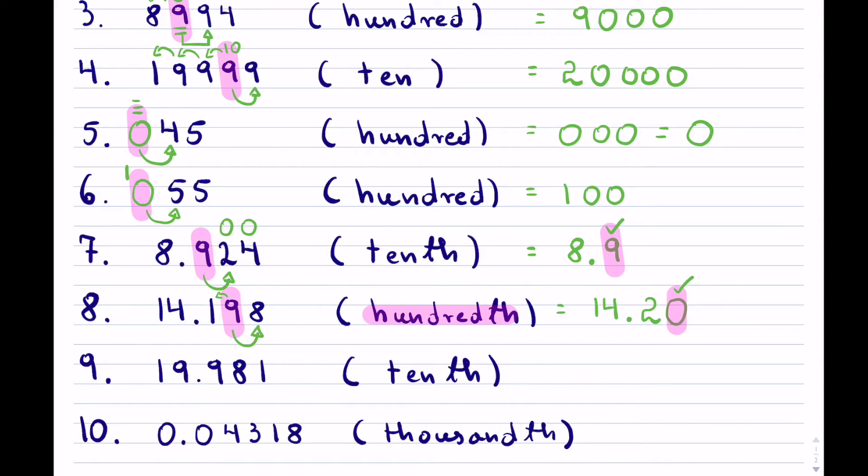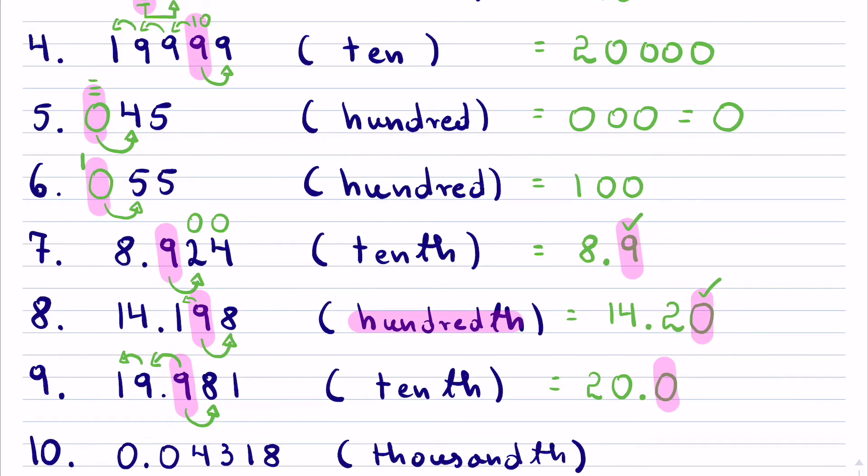Question 9 wants us to round 19.981 to the tenths. We look next door - it's very similar to the previous question. It's an 8, so my 1 is going to start carrying over. It's going to carry all the way to that 1, which will increase to a 2. This becomes 0. Because we want to round to the tenths, I'm also going to put a 0 here so that I remain in the tenths spot, and the rest will be removed.